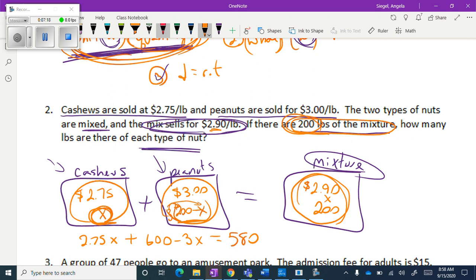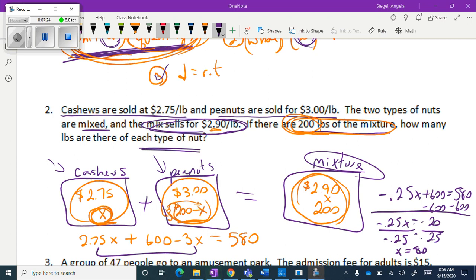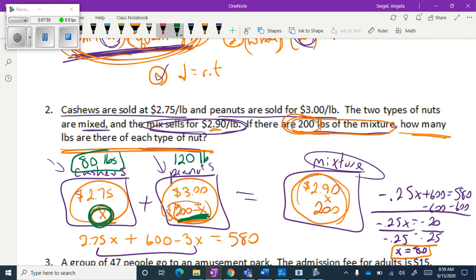And then it becomes just a solely algebra problem. I'm going to combine my terms and solve for x. When I do that, I get x equals 80. And so now, at this point, once I have my x, I always go back and answer the question. How many pounds of each type of nut? I can totally answer this now. Right here, that's my x. So there's going to be 80 pounds of cashews. And then I'm going to go back and answer this. So 200 minus 80 is 120 pounds of peanuts. So I have completed that problem. I've answered everything it's asked me to.